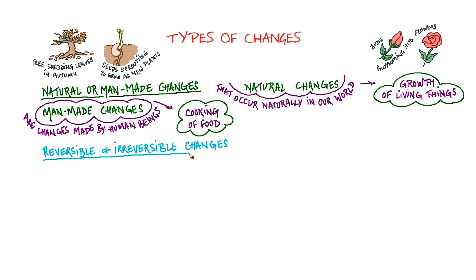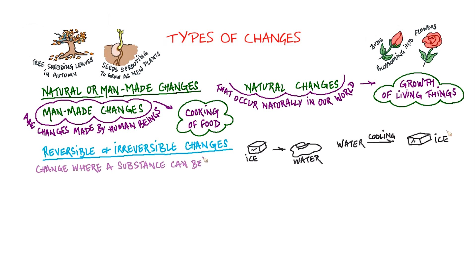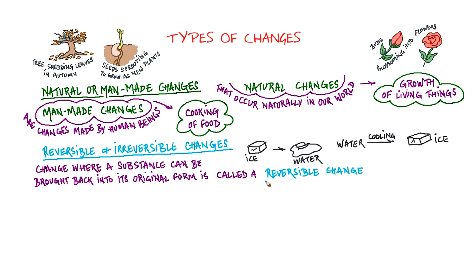Reversible and irreversible changes. Ice turns into water if heated. This water, on cooling, again changes back into ice. A change where a substance can be brought back into its original form is called a reversible change. Can you think of some other examples of reversible changes?